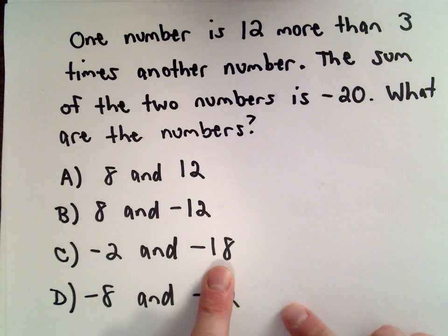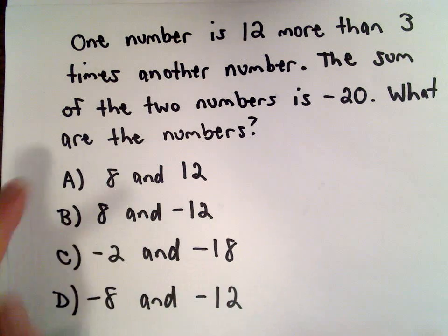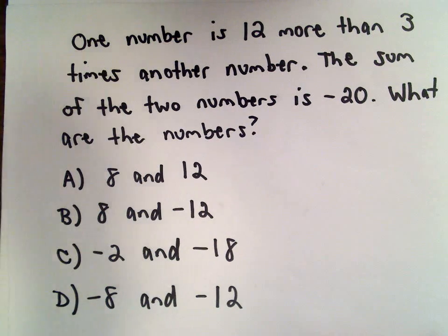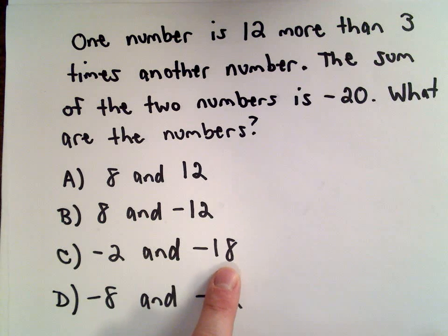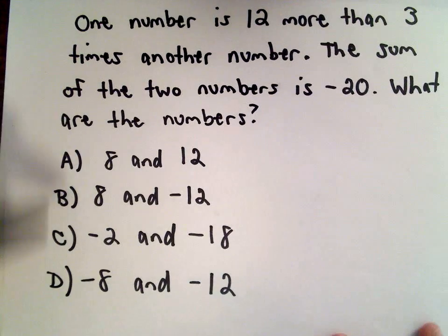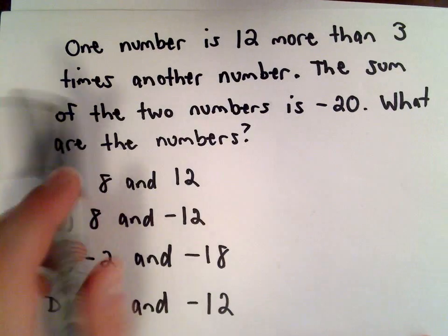So 3 times the smaller number—it doesn't look like any of these choices A, B, and C satisfy this requirement that one number is 12 more than 3 times the other, unless I'm doing my arithmetic poorly. And I don't think I am. So you could brute force check these using this criteria.